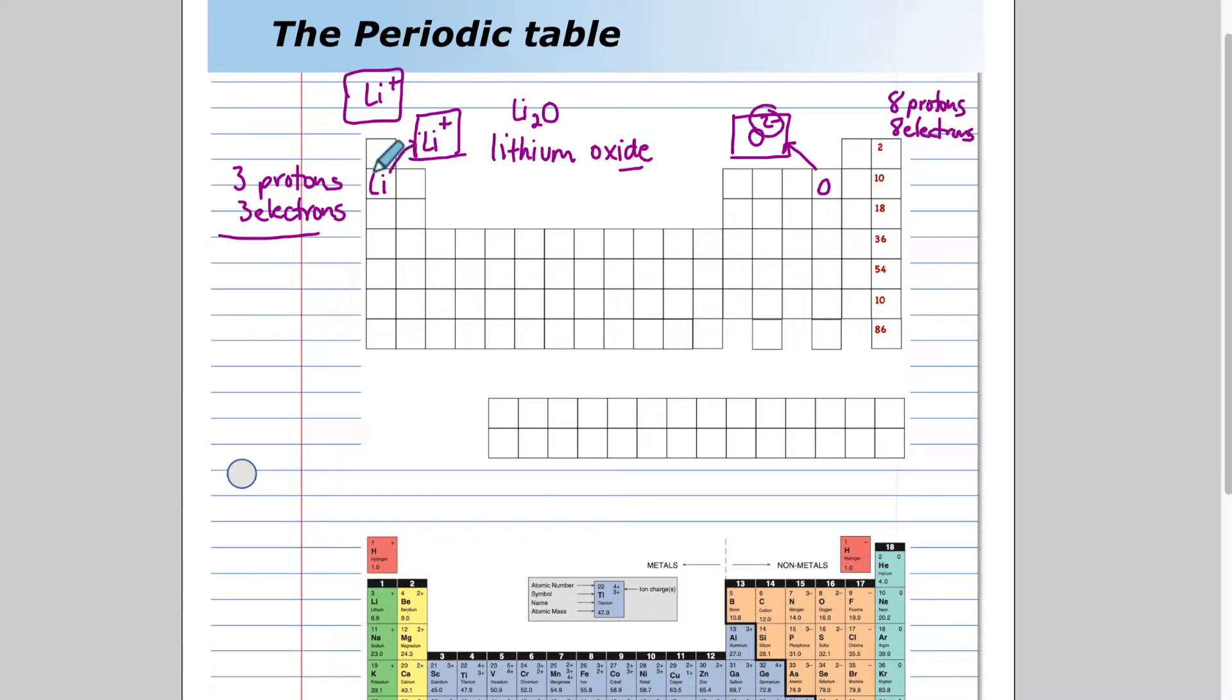We would write the formula as lithium with a subscript two to oxide. We don't mention the two in the name. We just say lithium oxide. So once again, lithium loses an electron. Oxygen gains two electrons. And in order to make sure all the spots are full, we would need two lithium ions for every one oxide. The name lithium oxide can be written as a formula Li2O.